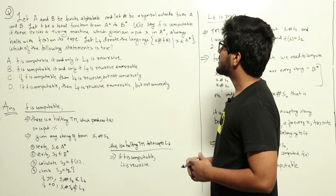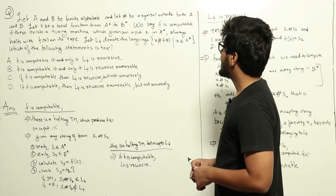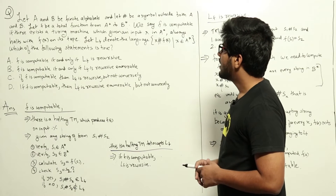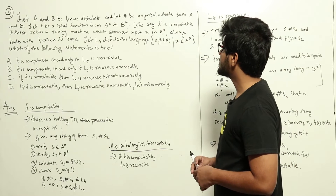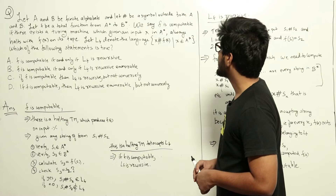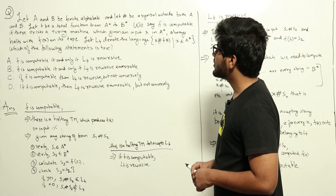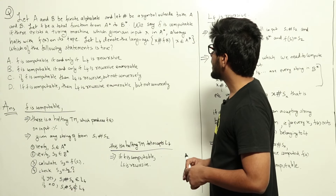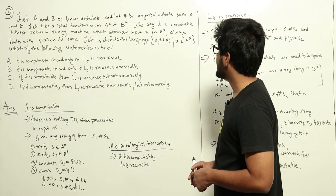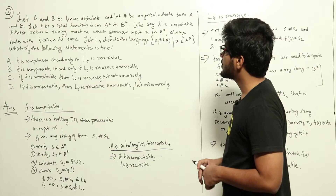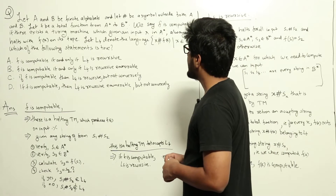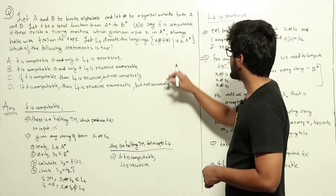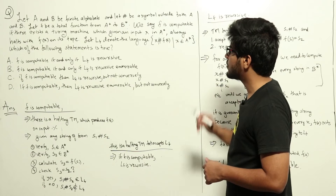Let a and b be finite alphabets and let hash be a symbol outside both a and b. Let f be a total function from a-star to b-star. We say f is computable if there exists a Turing machine which, given an input x in a-star, always halts with f of x on its tape. Let Lf denote the language { x hash f(x) | x ∈ a-star }.